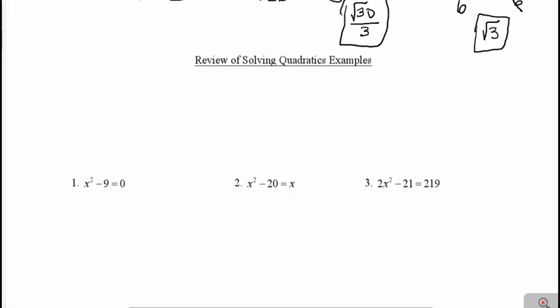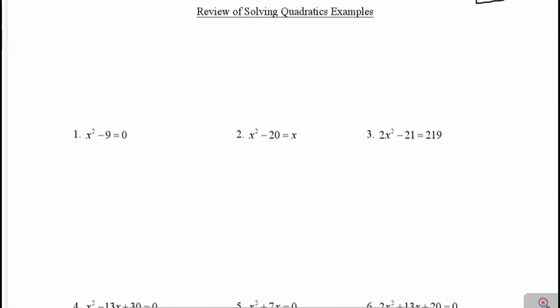Now we're going to move on and talk about how to solve quadratic equations. We've already been doing this throughout the entire school year — factoring and solving — but let's review some different types of examples. The general equation for a quadratic is ax squared plus bx plus c equals 0. This is our standard form. So a is the coefficient in front of the x squared, b is the coefficient in front of the x, and c is just the constant number that stands alone. Before we can factor a quadratic, we always want to get our equation in standard form — equal to 0, with a first, then b, then c. In example 1 we're missing a b term.